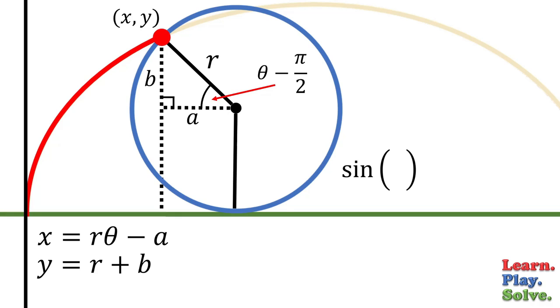The sine of the angle theta minus pi over 2 is the opposite side over the hypotenuse, which is b over r.